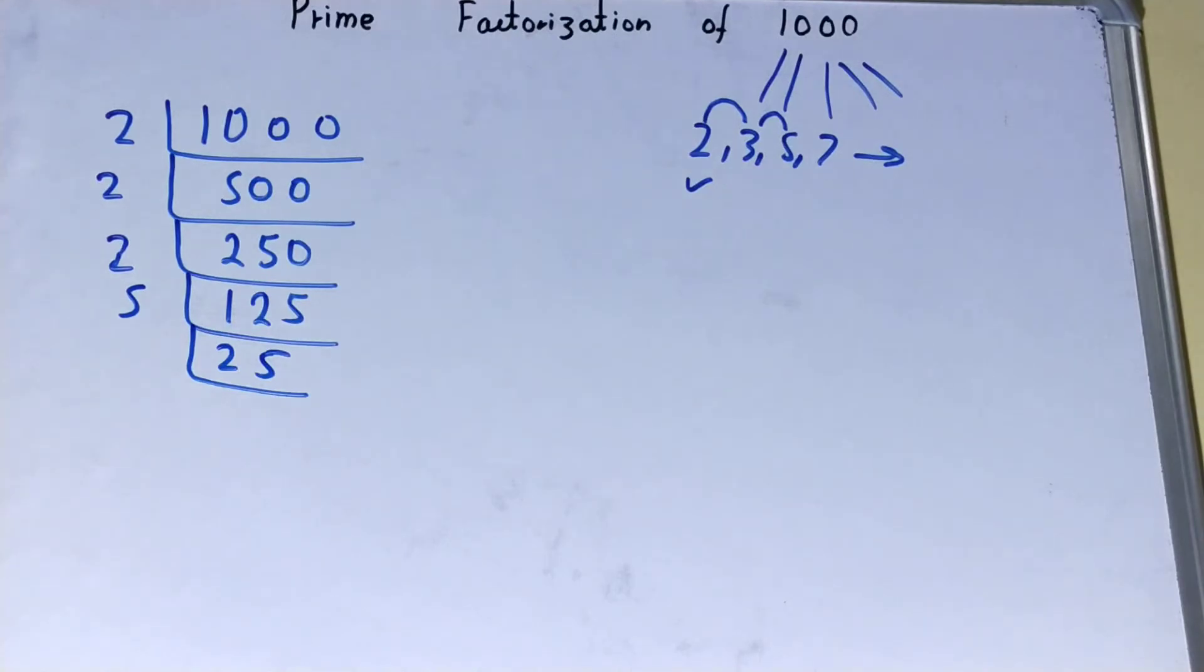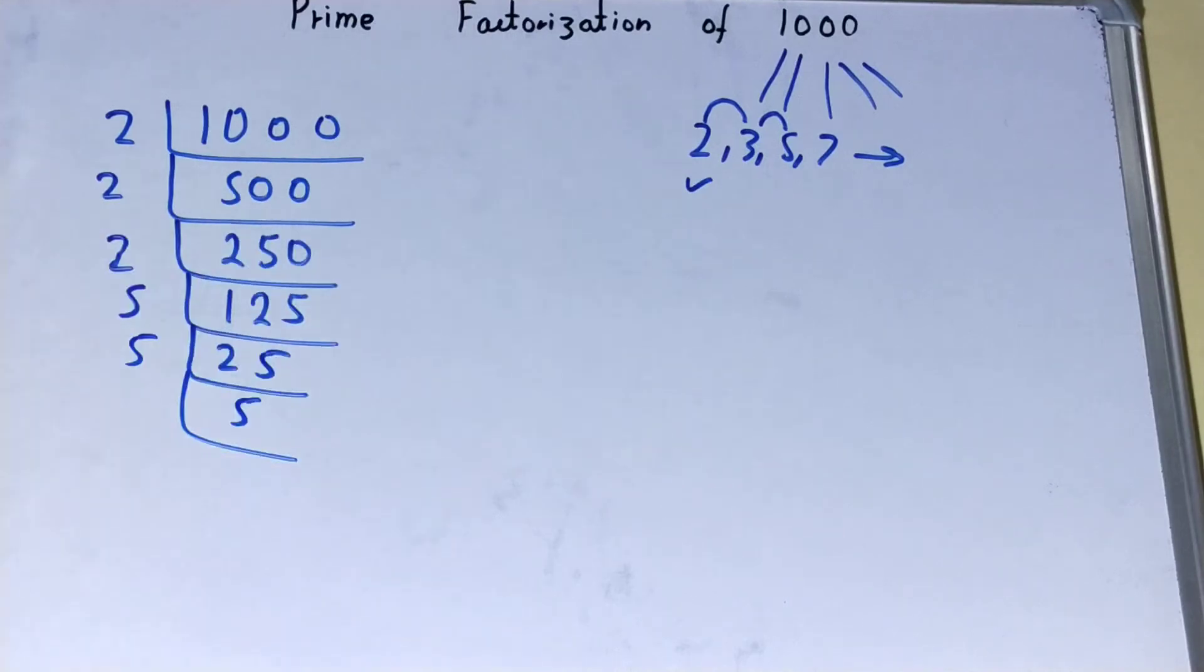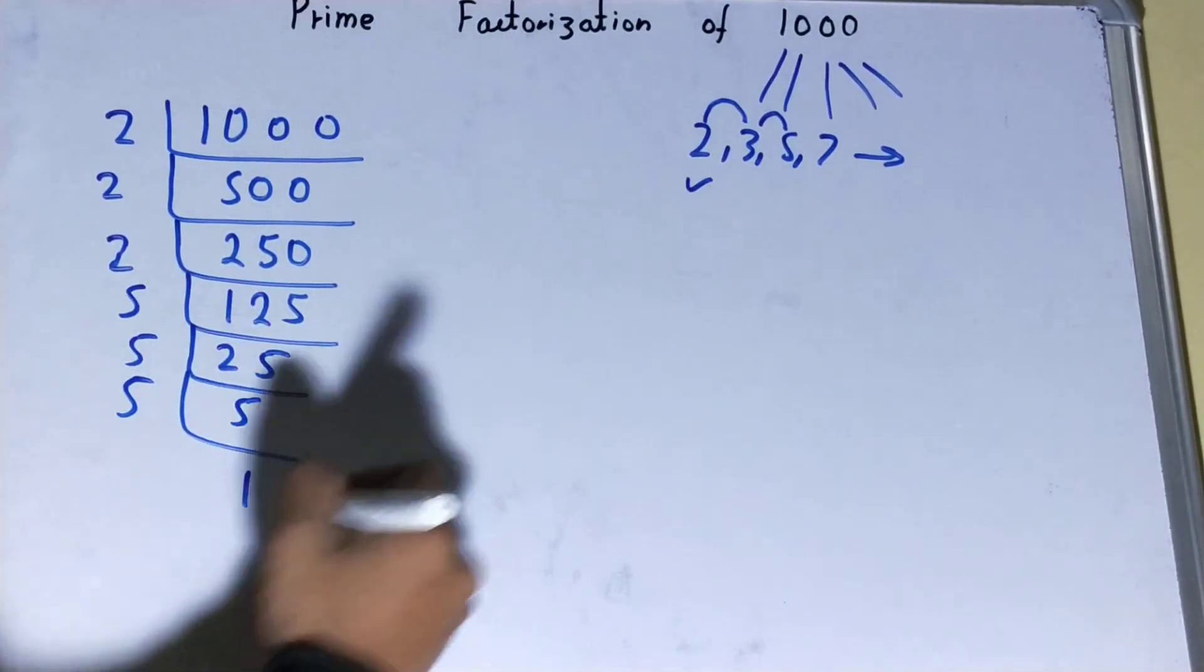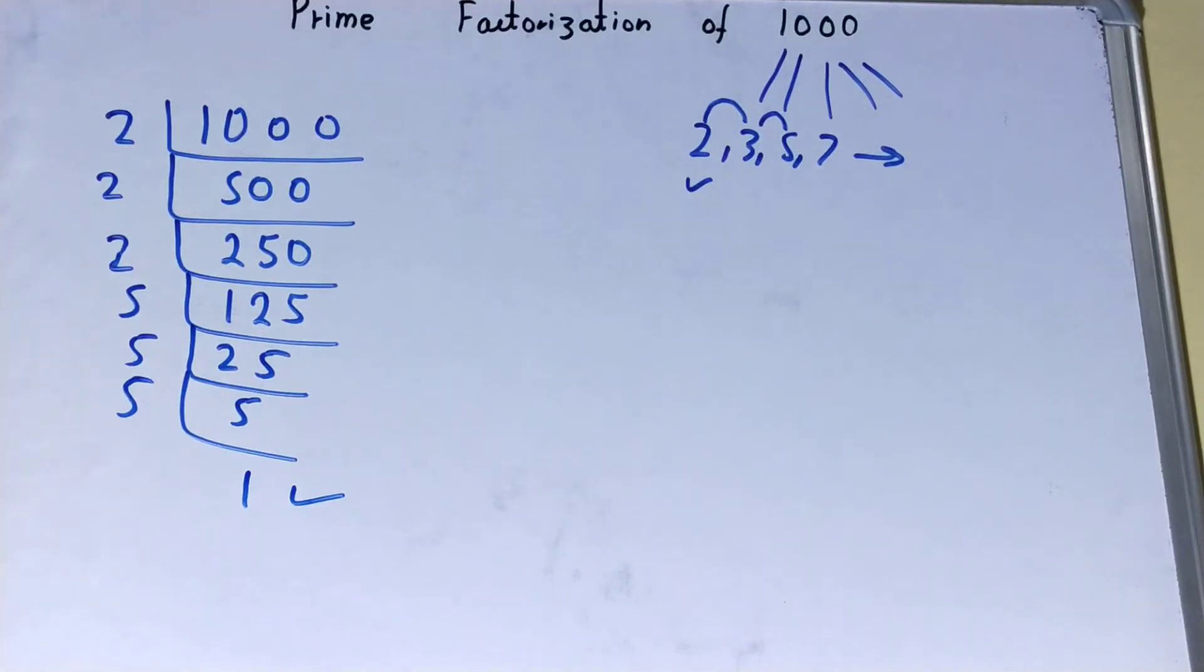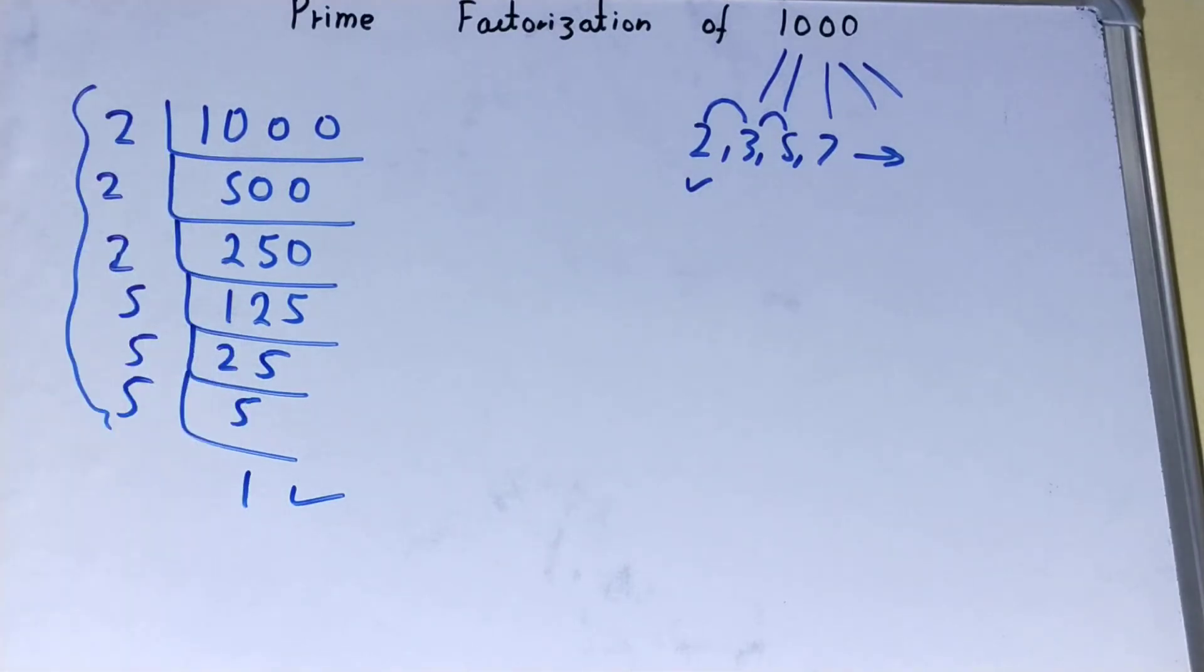At last, is this 5 divisible by 5? It is, so divide it and you'll be left with 1. Once you're left with 1, your whole process is done. And whatever you have on the left-hand side will be the set of prime factors for the number 1000, that is 2 × 2 × 2 × 5 × 5 × 5.